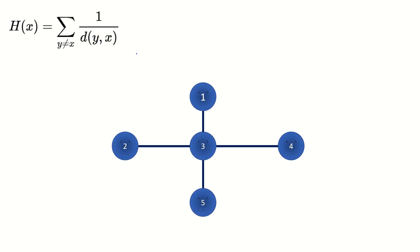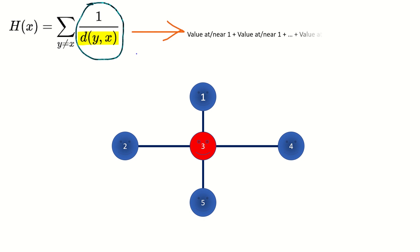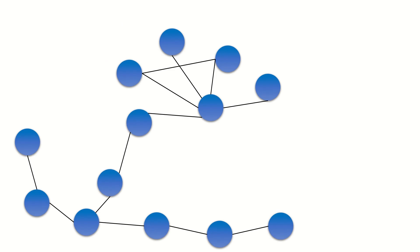Now picture a vertex that is close to every other vertex in its graph, such as vertex 3 in this graph. In this case, the distances between vertices are low, leading to a higher value for the reciprocal of the distance — something at or close to 1, since the minimum possible denominator is 1. And when we sum over all vertices, we end up with a larger sum. So vertices that are farther from most other vertices in the graph have low harmonic centrality, and vertices that are closer to most other vertices have high harmonic centrality.